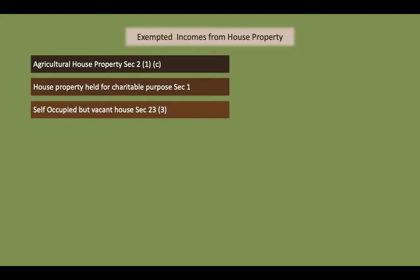A self-occupied but vacant house — if an assessee keeps his own house self-occupied but is living in a rented house elsewhere due to employment or profession, the income from such house is taken to be nil. House used for the assessee's own business or profession — there is no income chargeable to tax under this head, but it will be charged under business or profession.